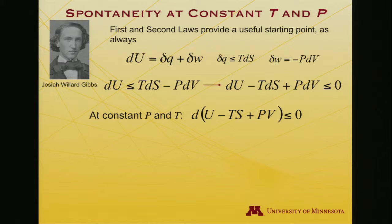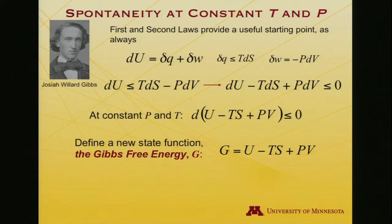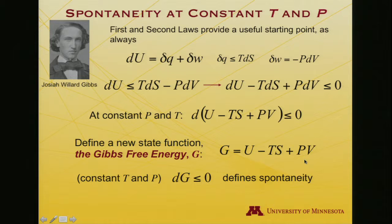At constant pressure and temperature, that is equivalent to the differential of this entire quantity. Taking that differential, I get a dU, a d(TS) but at constant temperature dT is zero so I get TdS, and a d(PV) but at constant pressure dP is zero so I get PdV. That suggests we define yet another state function — the Gibbs free energy G, which equals U minus TS plus PV — with the condition for spontaneity at constant T and P that dG is less than or equal to zero.